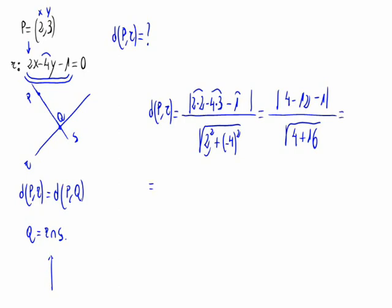In the numerator, we would have the absolute value of -9, divided by the square root of 20. The absolute value of -9 is 9, divided by the root of 20, and that's the distance we were asked to find.